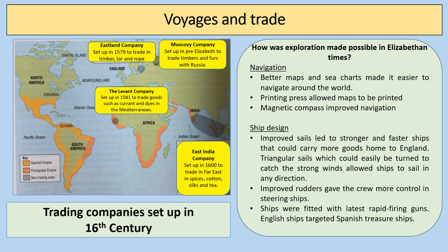There were new trading companies set up during this time — the Muscovy Company to trade with Russia, the Eastland Company set up in 1579 to trade timber, tar and rope with Scandinavian countries, the Levant Company set up in 1581 to trade goods such as currants and dyes in the Mediterranean, and right towards the end of Elizabeth's rule, the East India Company was set up in 1600 to trade in the Far East in spices, cotton, silk and teas. What made this exploration possible included better navigation — maps, sea charts, the printing press and the magnetic compass — as well as much improved ship design.